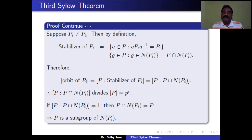Therefore the number of elements in the orbit of Pi equals the index of the stabilizer of Pi in P, which is the same as the index of P ∩ N(Pi) in P. Since the orbit size divides the order of P, and the order of P is P^r, the possible values for the index of P ∩ N(Pi) in P are 1, P, P², ..., P^r.